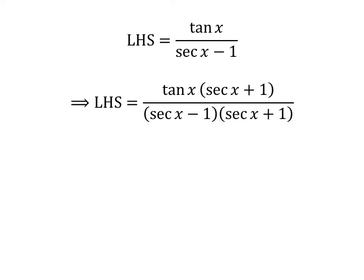Multiplying the numerator and the denominator of a fraction by a common factor does not change the value of the fraction. So, let us multiply the numerator and the denominator by secant of x plus 1. Hence, the left hand side of the identity is equal to tangent of x times secant of x plus 1, upon secant of x minus 1 times secant of x plus 1.